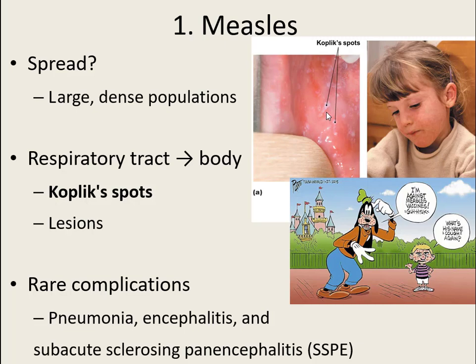Most individuals who get measles suffer a widespread rash, fever, and fatigue, but most do recover without any long-lasting damage. However, rare complications occur in about two to three cases per thousand, including pneumonia, encephalitis, and subacute sclerosing panencephalitis — inflammation of brain tissue that can be deadly. Since two to three people in every thousand can be hospitalized or die, we have a vaccine that can simply prevent it altogether.